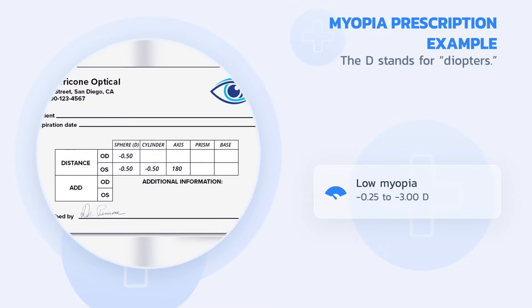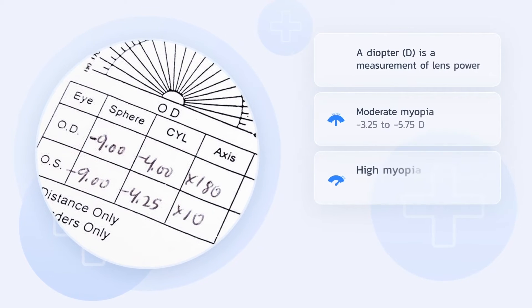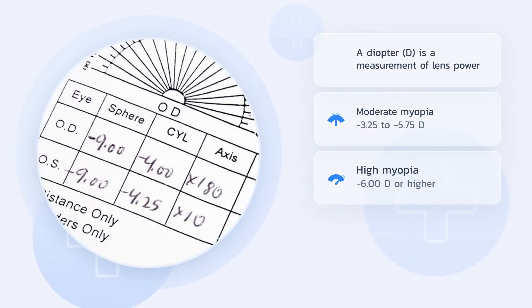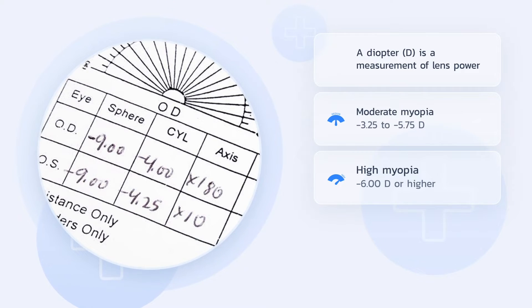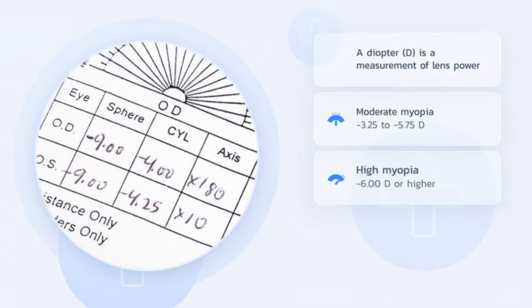A diopter is a measurement of lens power. A person with moderate myopia would have a prescription between negative 3.25 and negative 5.75D. High myopia includes any prescription at negative 6.00D or higher.